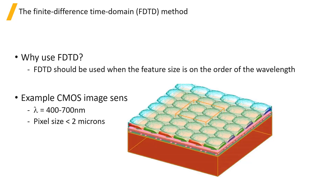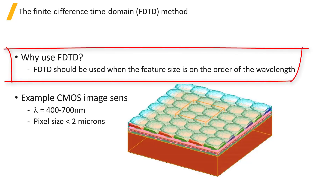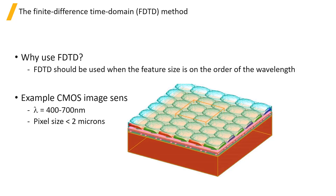FTTD is typically used when the feature size is on the order of the wavelength. This wavelength scale regime, where diffraction, interference, coherence, and other similar effects play a critical role, is called wave optics. When the feature sizes are much larger than the wavelength, other methods, such as ray tracing, are more efficient.